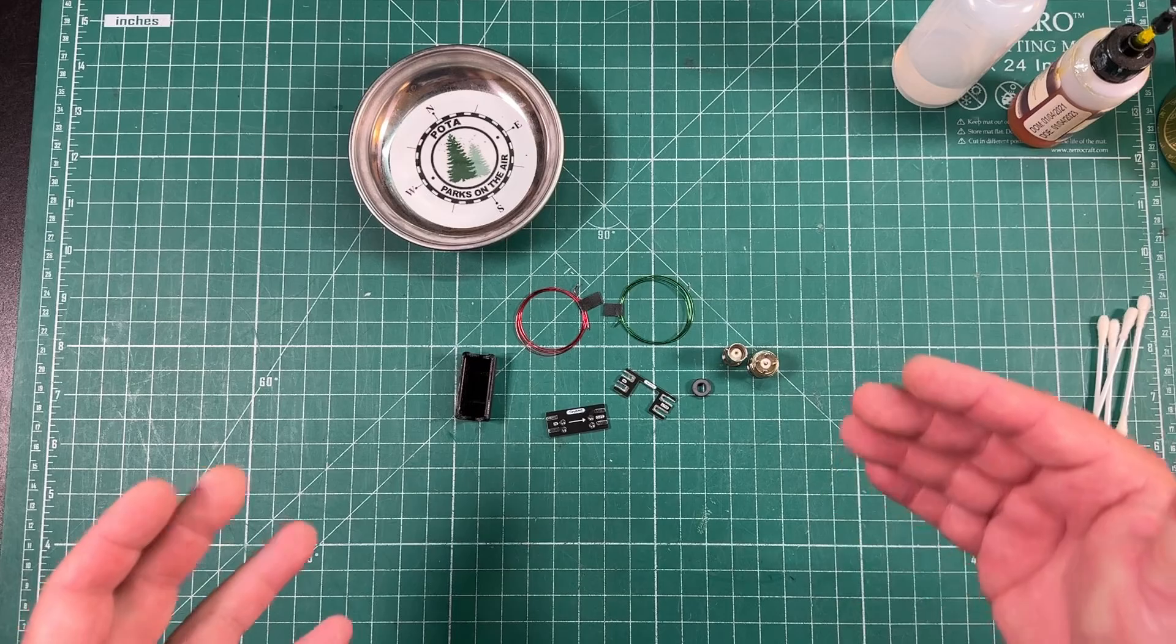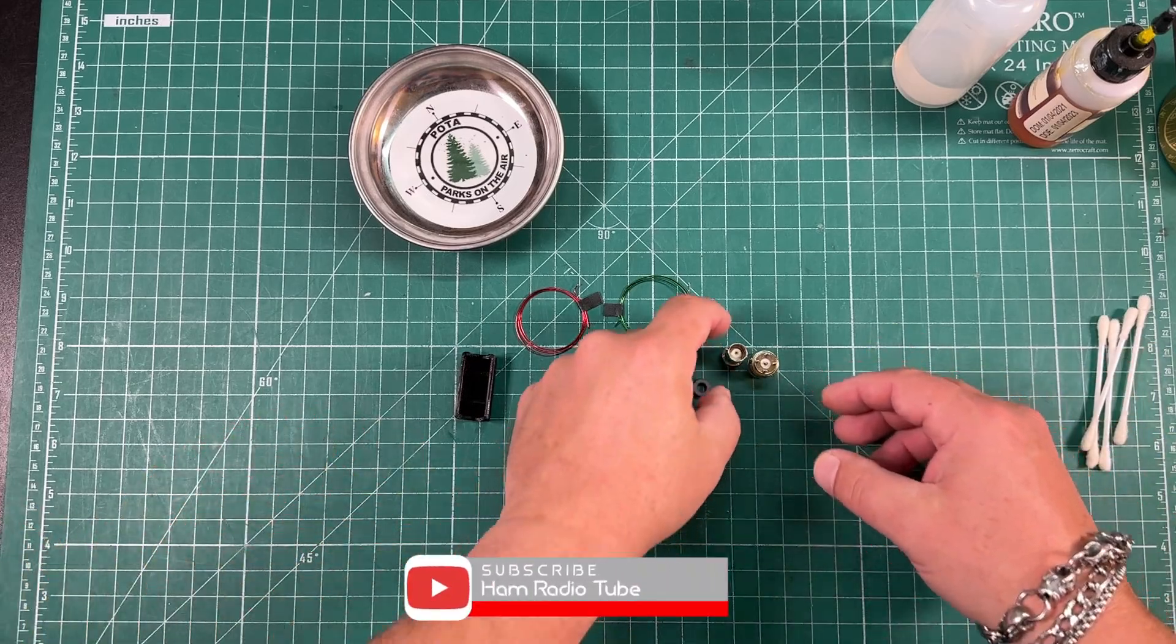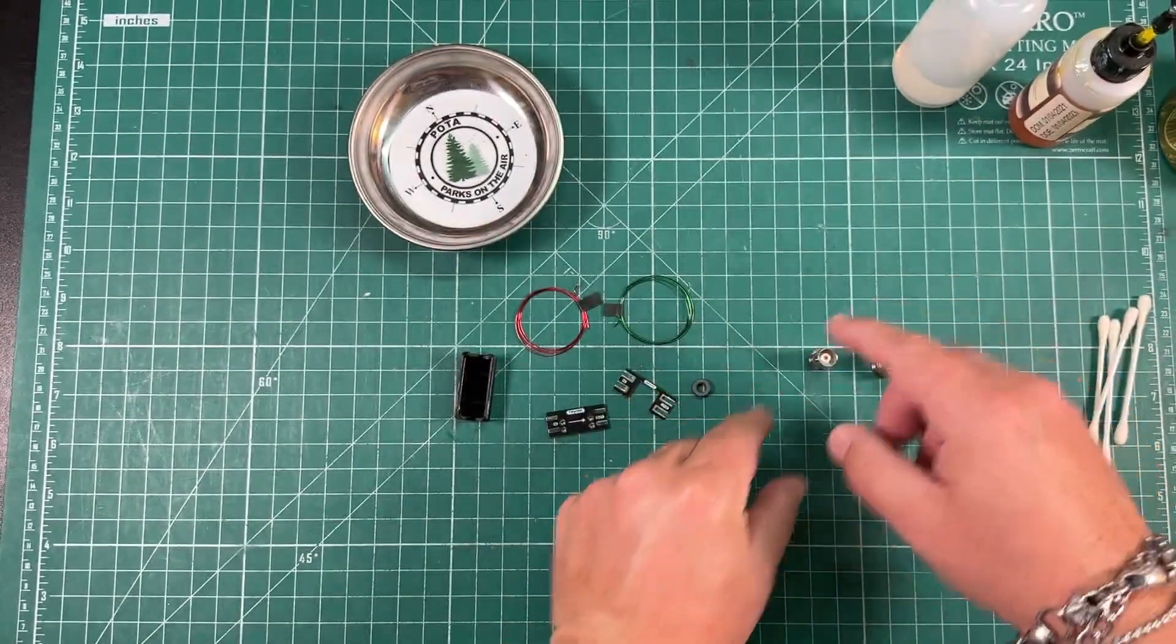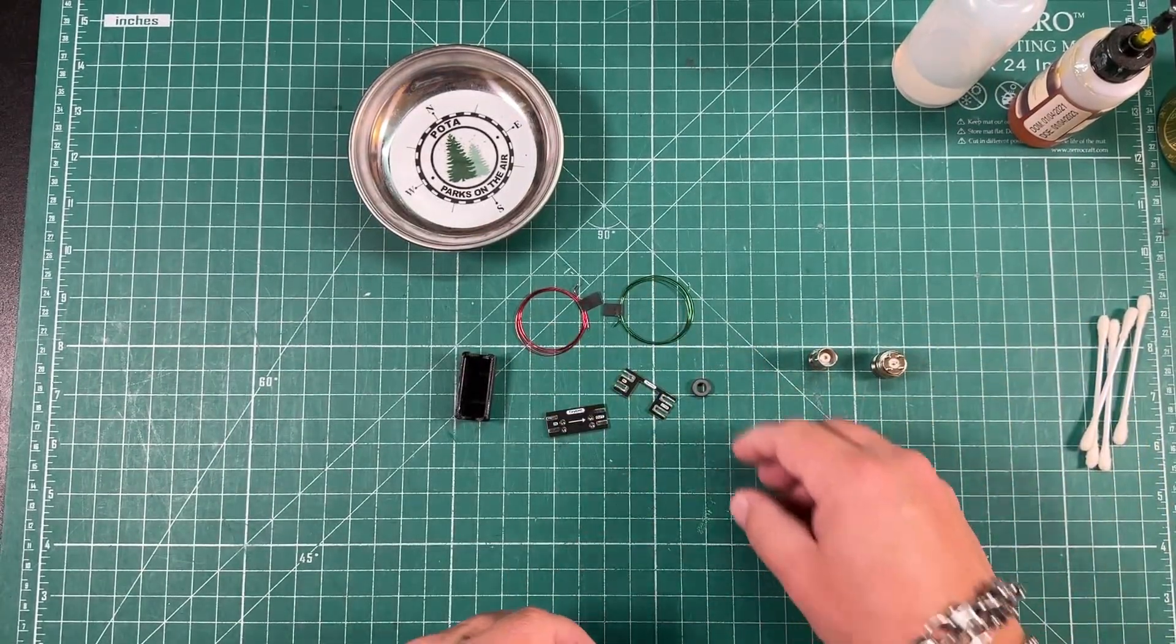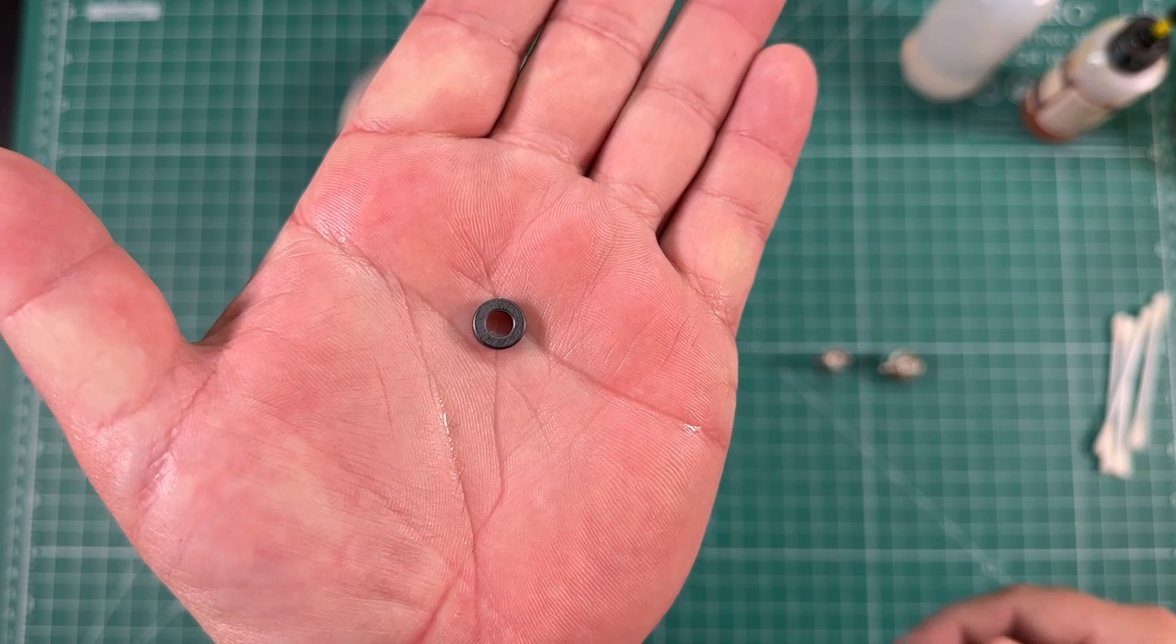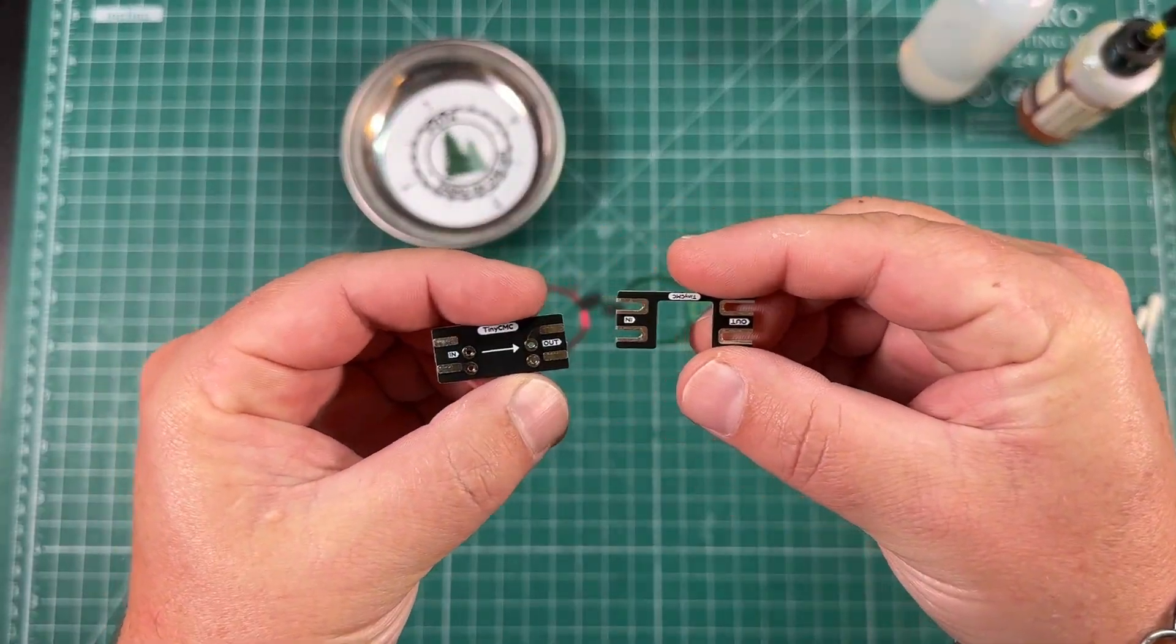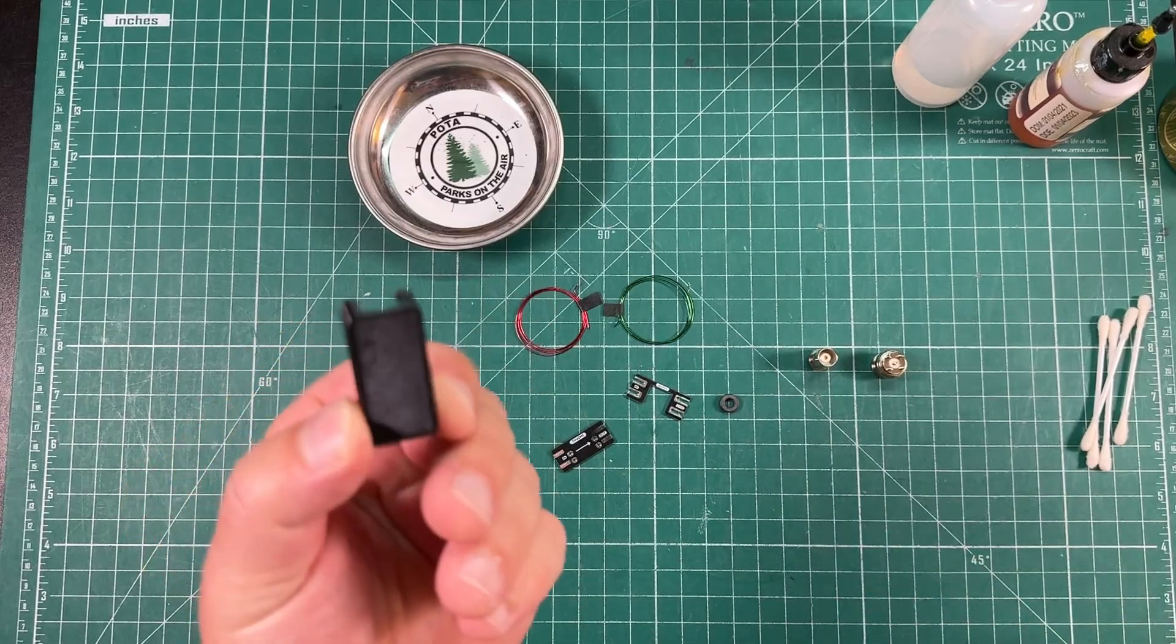The first thing we want to do is make sure we have all our parts, so we should have a female BNC, a male BNC, a green and a red magnet wire, a tiny little toroid, both of our PCBs and our case.